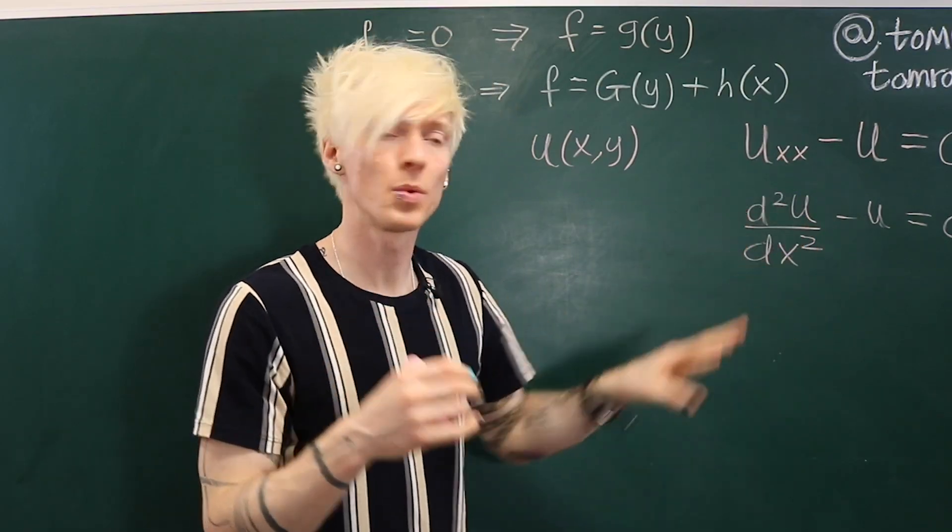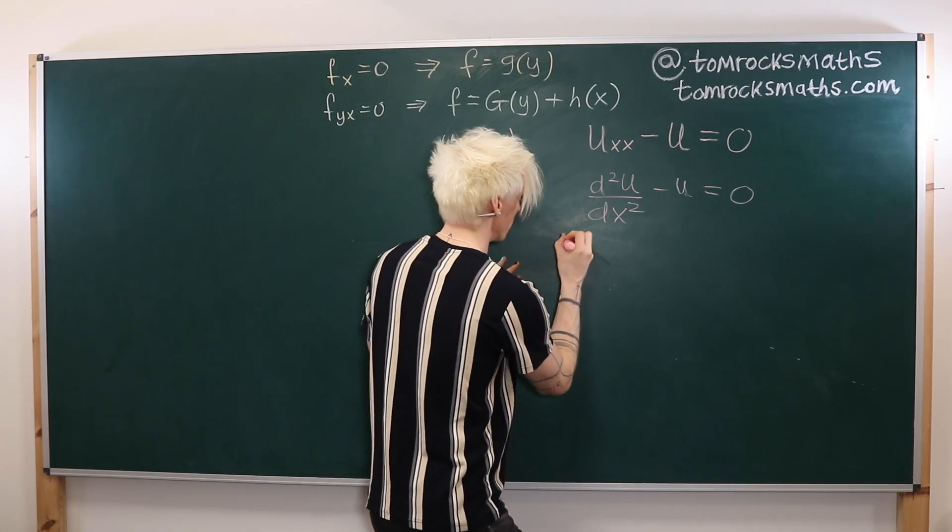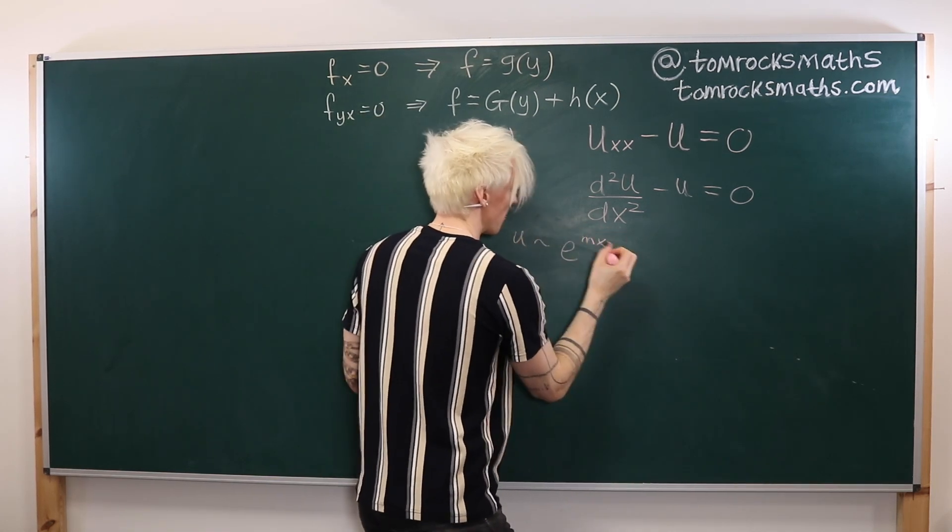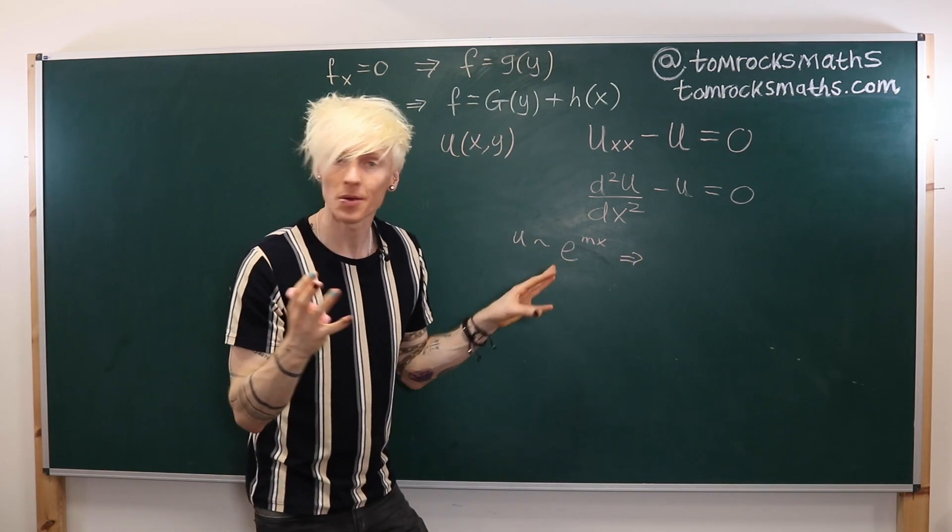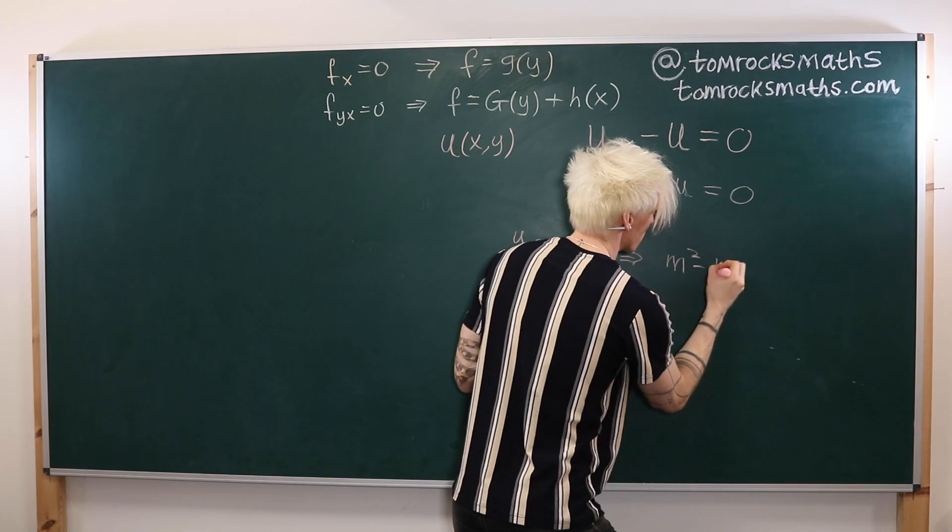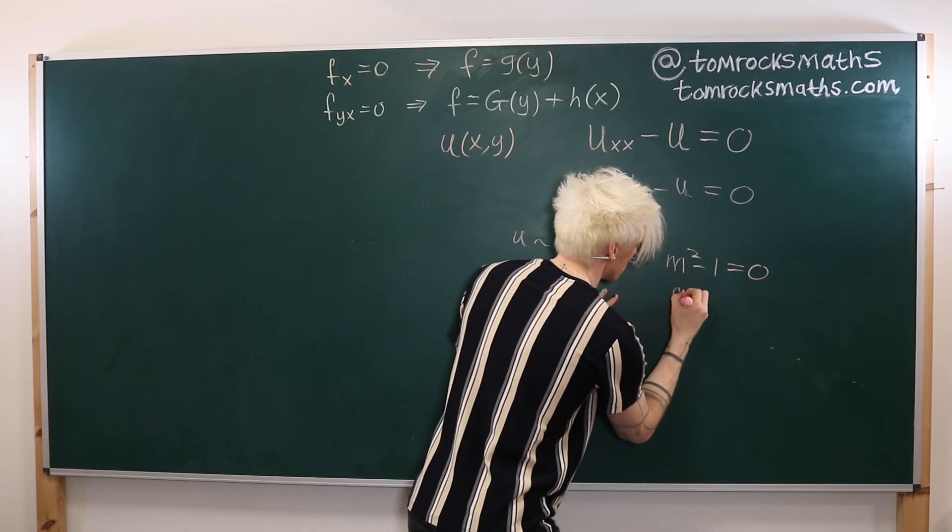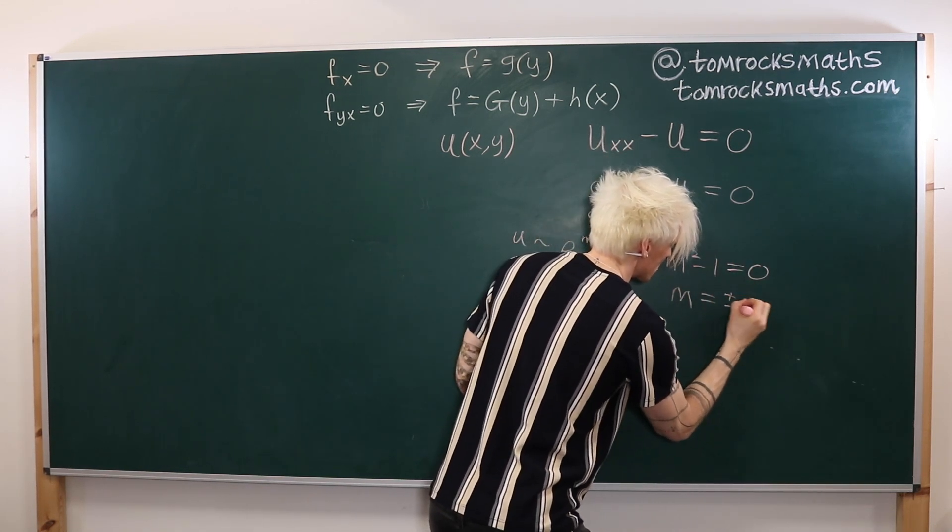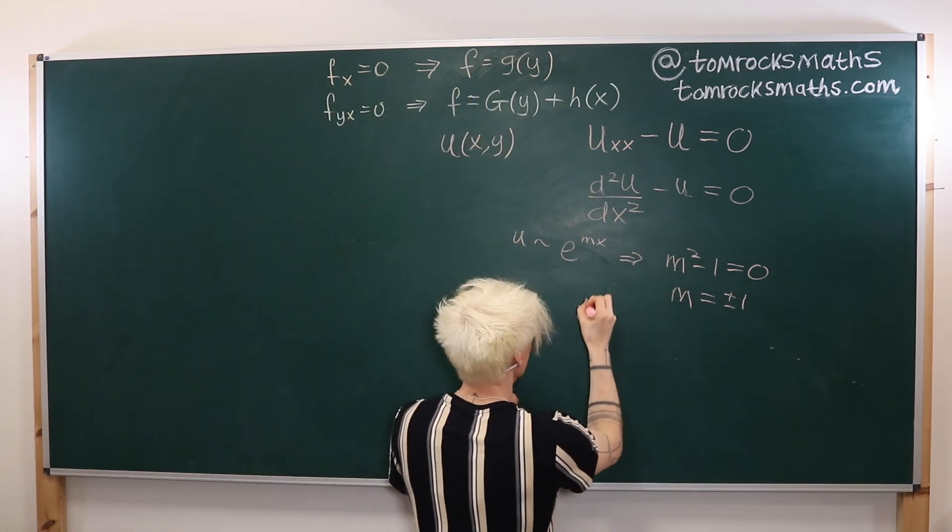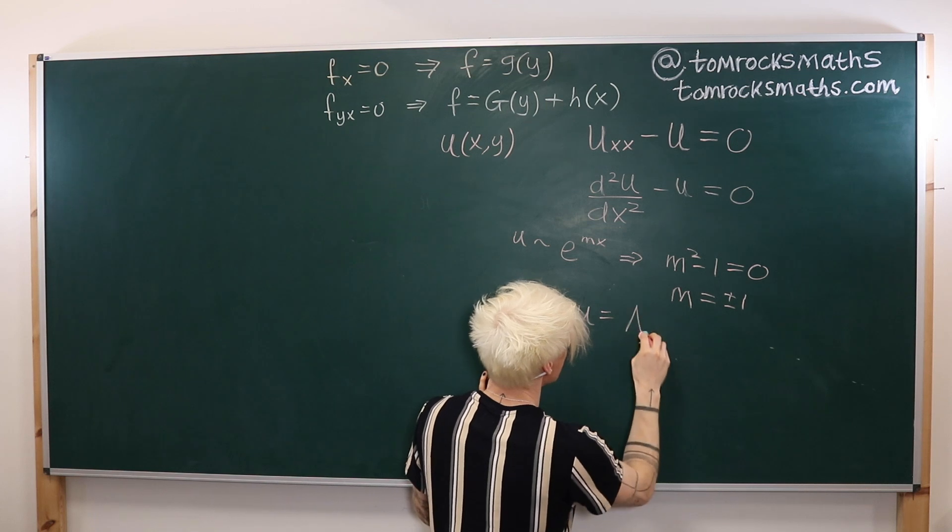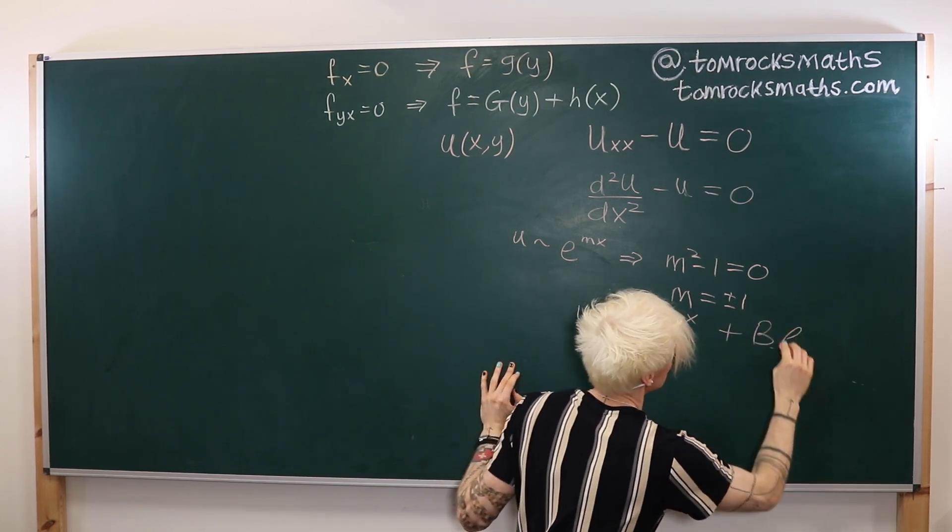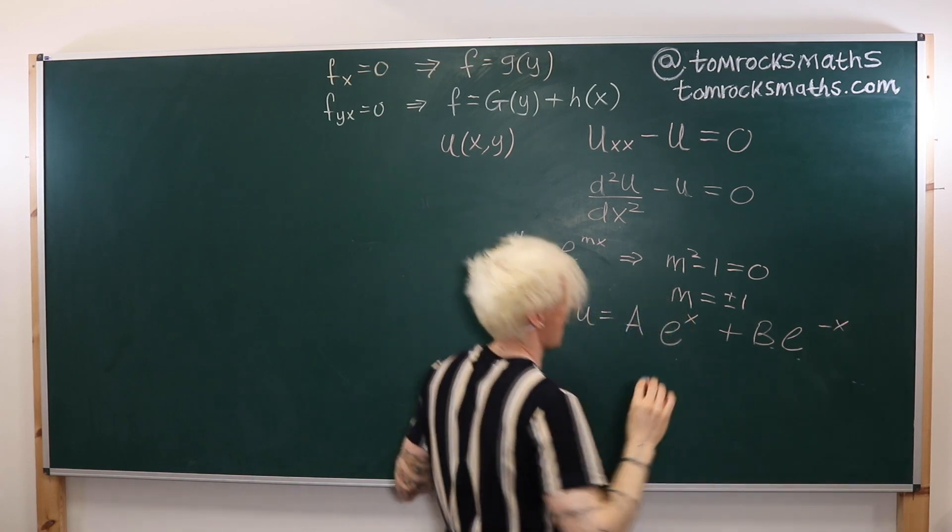To solve this equation we would try a solution of the form e to the mx, plug that in to get our auxiliary equation which here will just be m squared minus one equals zero which tells us that m is plus or minus one and so for this ODE our solution is u equals a e to the x plus b e to the minus x.